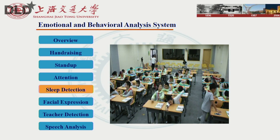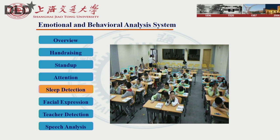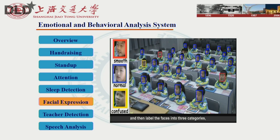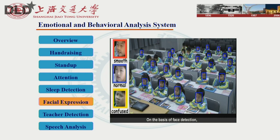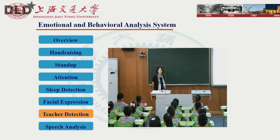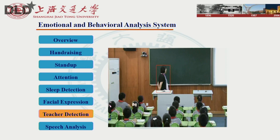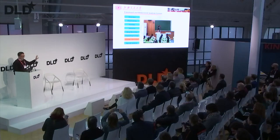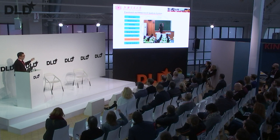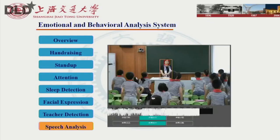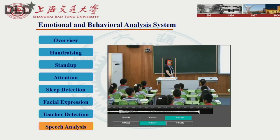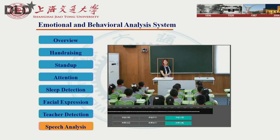There are many factors that influence student attention, including whispering and other phenomena. When a student is not engaged, sleeping on the desk occurs — especially in primary school, some students are always sleeping. We also focus our research on emotion and facial expressions. We created a database of more than 300,000 entries for emotions in young kids. We also do teacher detection — tracking how many times the teacher faces students versus turns away, and analyzing the teacher's pronunciation, intonation, and speech speed to assess emotional status.